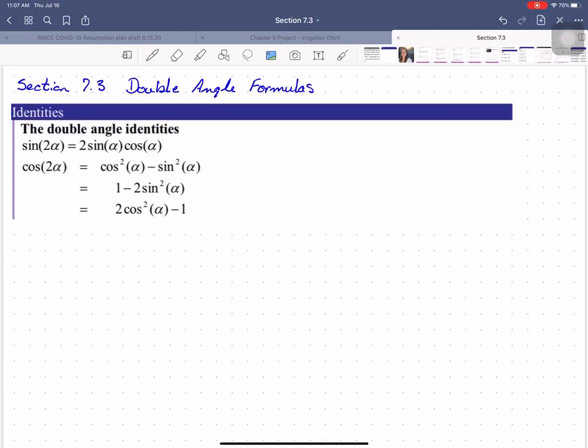If you think about what would happen with the angle sum identities if you added, if you worked with sine alpha plus alpha, you'd be working with sine 2 alpha, and you'd get 2 sine alpha cosine alpha. So the double angle formula for sine is pretty straightforward.